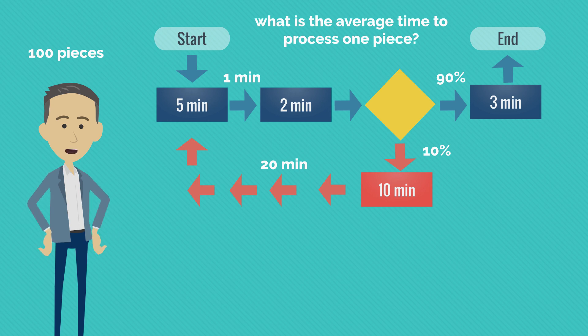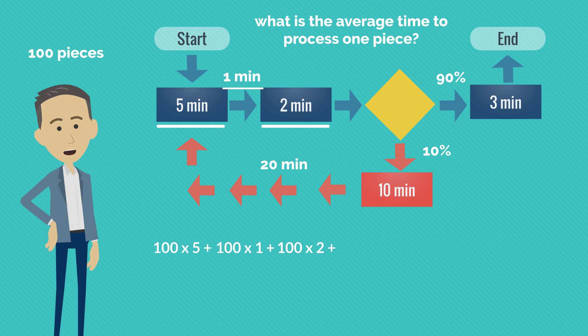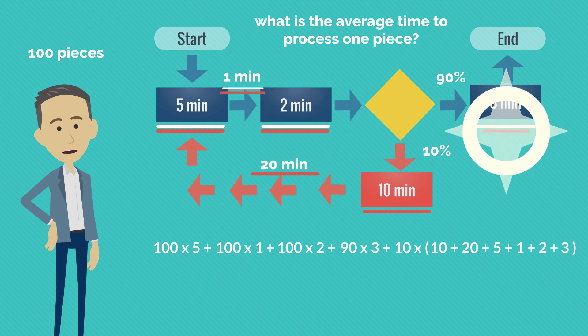Are you ready for some basic math? All the 100 pieces go through the 5 minutes step, wait for 1 minute, do the 2 minutes step, and end up in the decision point. Here, 90 pieces will just move forward to the 3 minutes step. The rest of 10 pieces will go down in the rework loop and do the 10 minutes step, the 20 minutes waiting, do the 5 minutes, the 1 and the 2 minutes once again before finally going into the last step of 3 minutes.